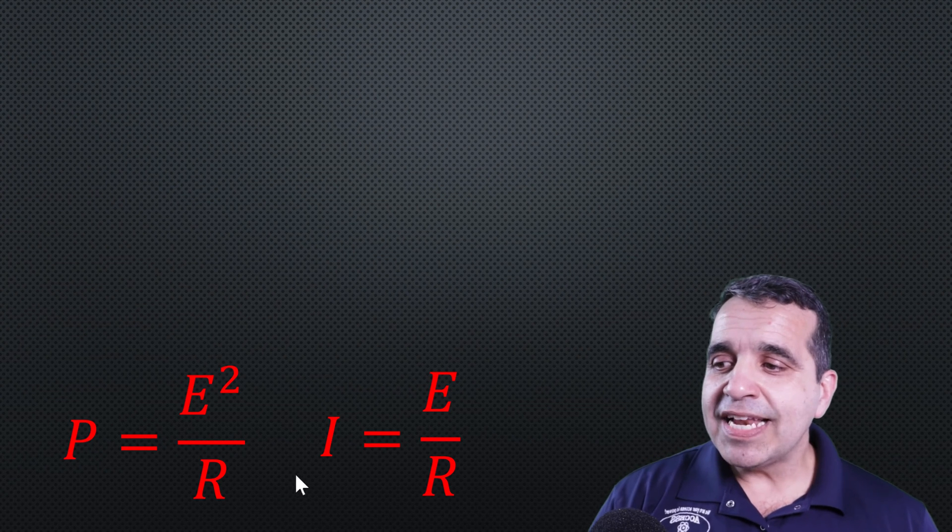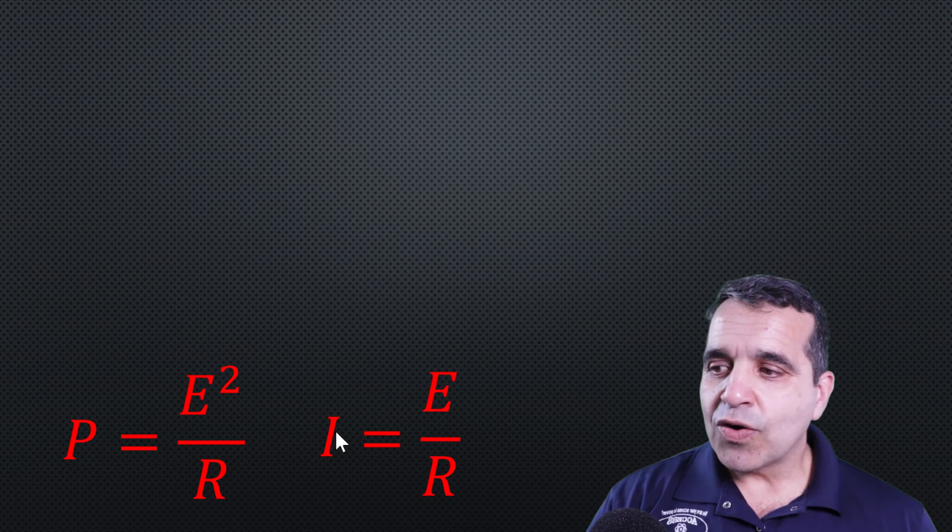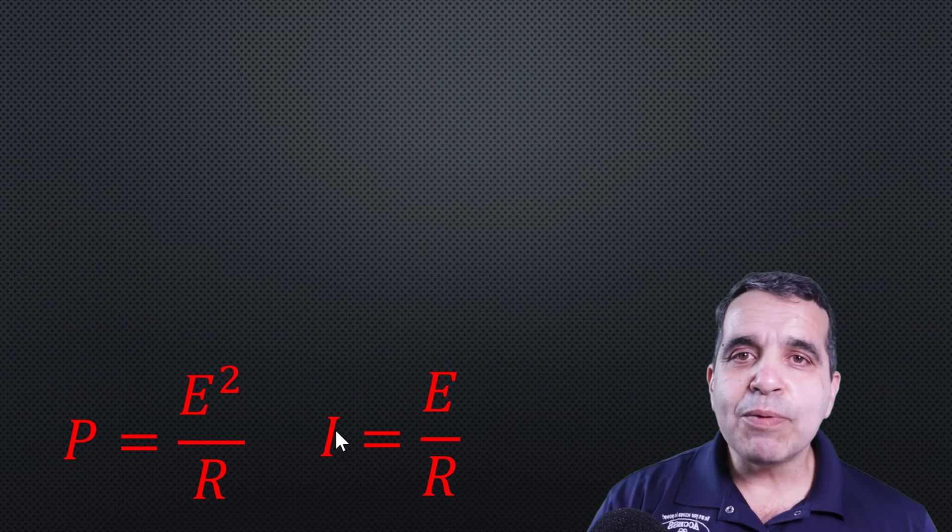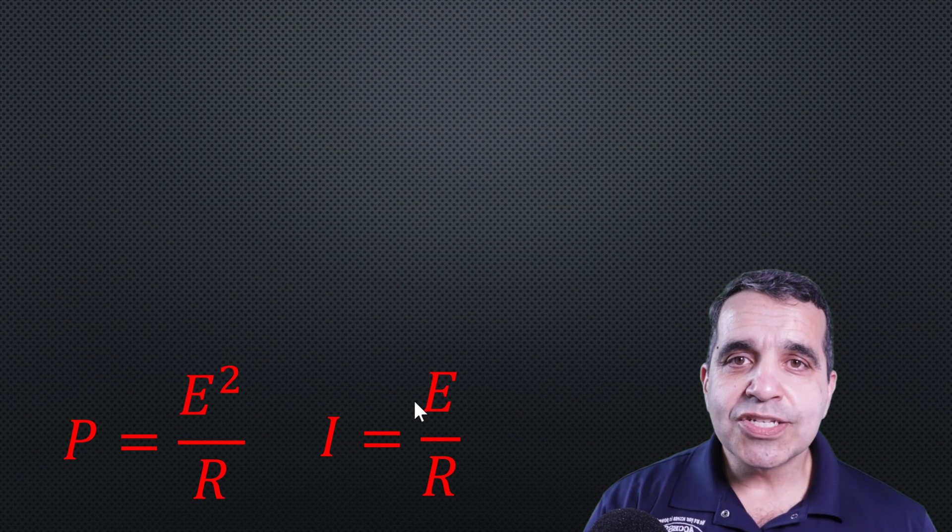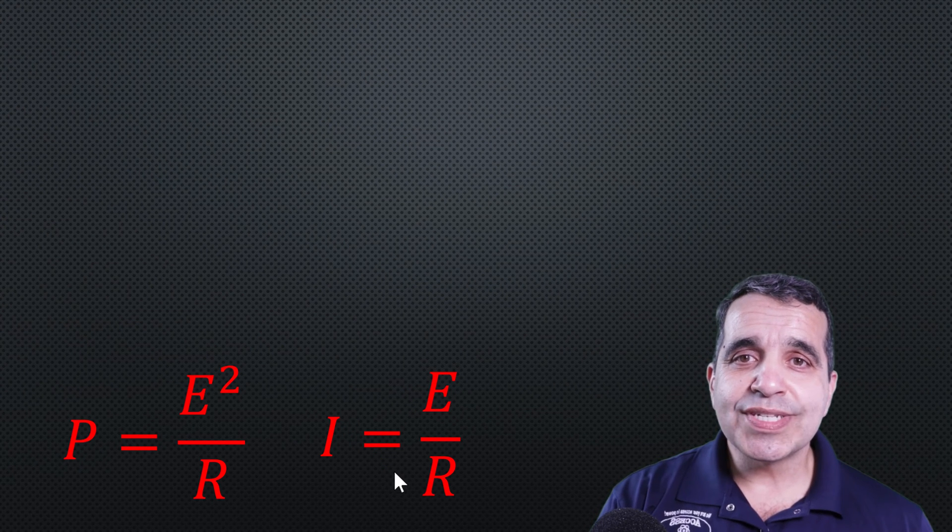Let me explain an easier formula. I equals E over R. I, or amperage, is directly proportional to voltage. It's also inversely proportional to resistance.